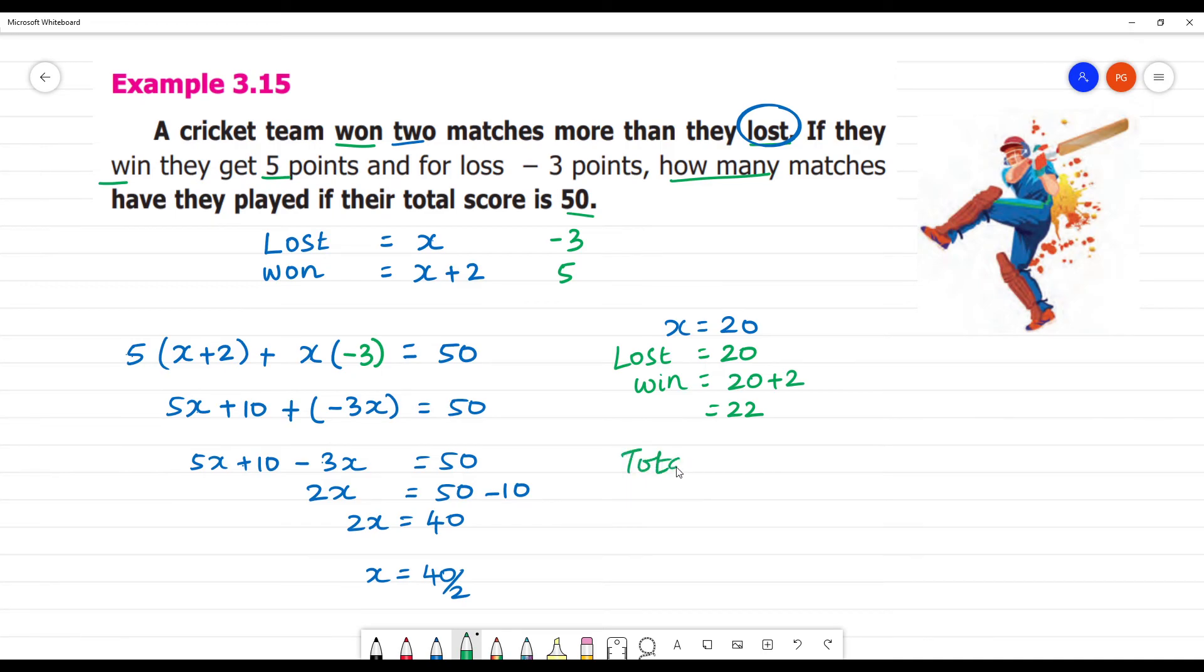Total matches they played. Win for the match is 22, loss for the match is 20. Total match is equal to 42 matches.